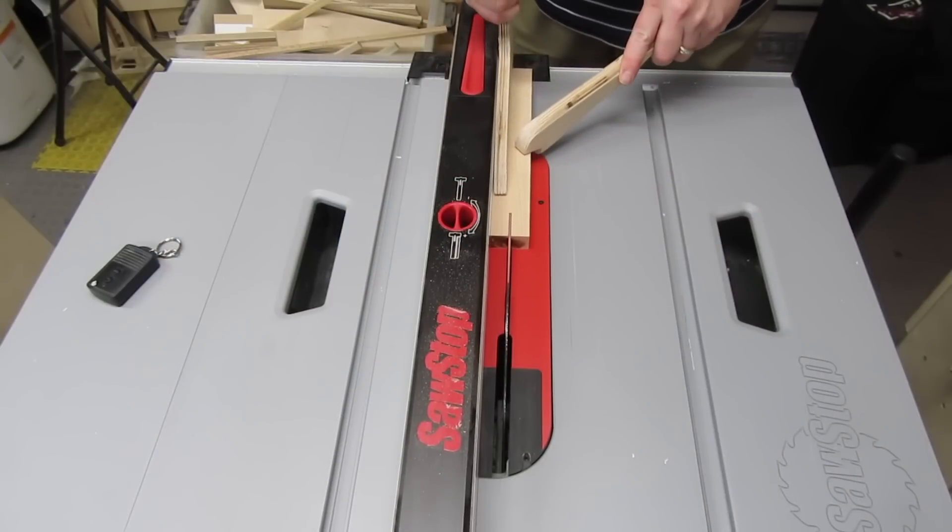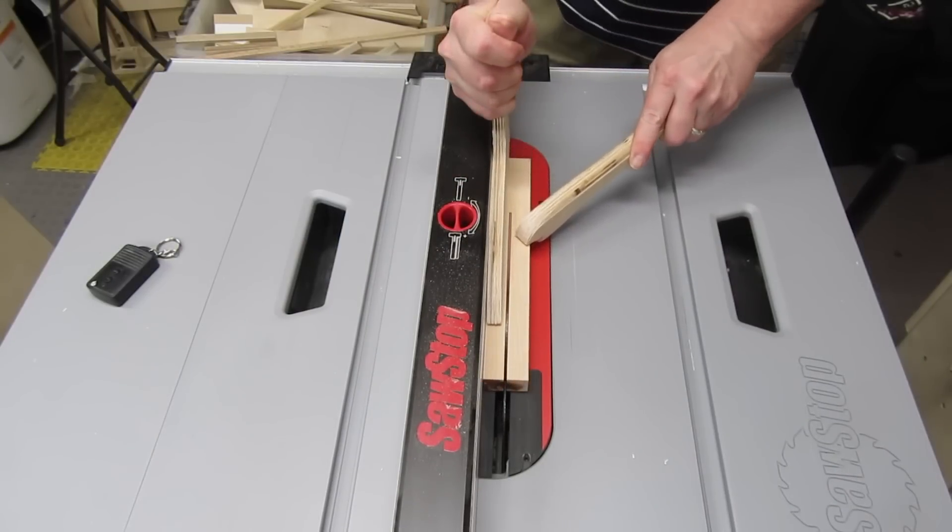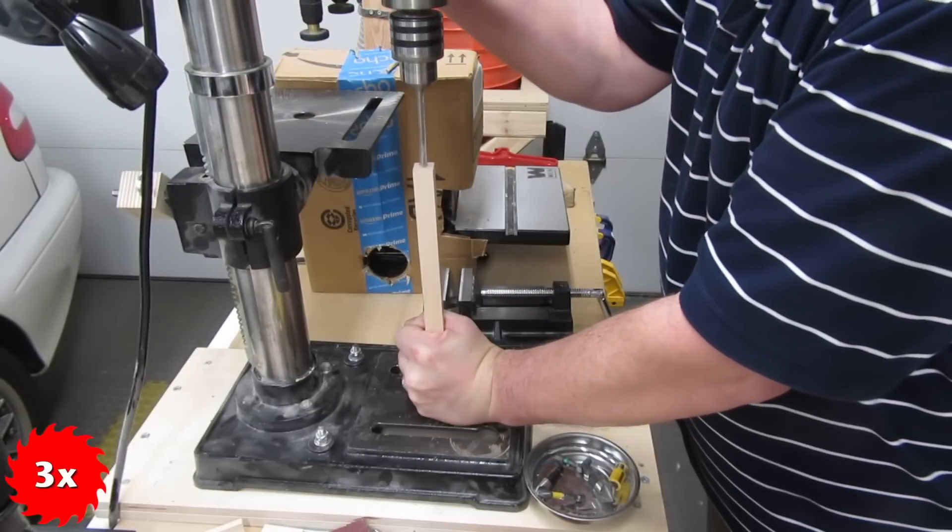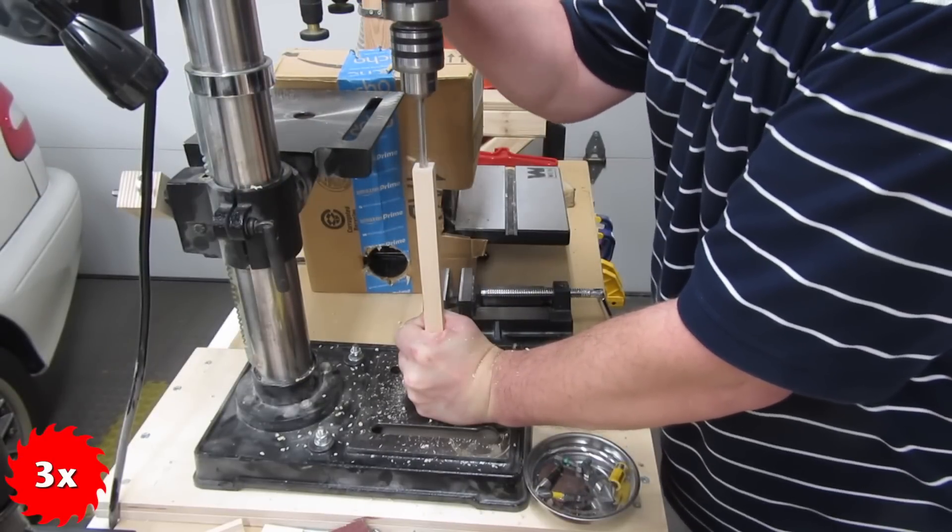I had a maple board that was three quarters of an inch thick, so I cut a three quarter inch square shaft to the right length. Then I used a quarter inch bit to drill holes in the ends for the hex shafts.